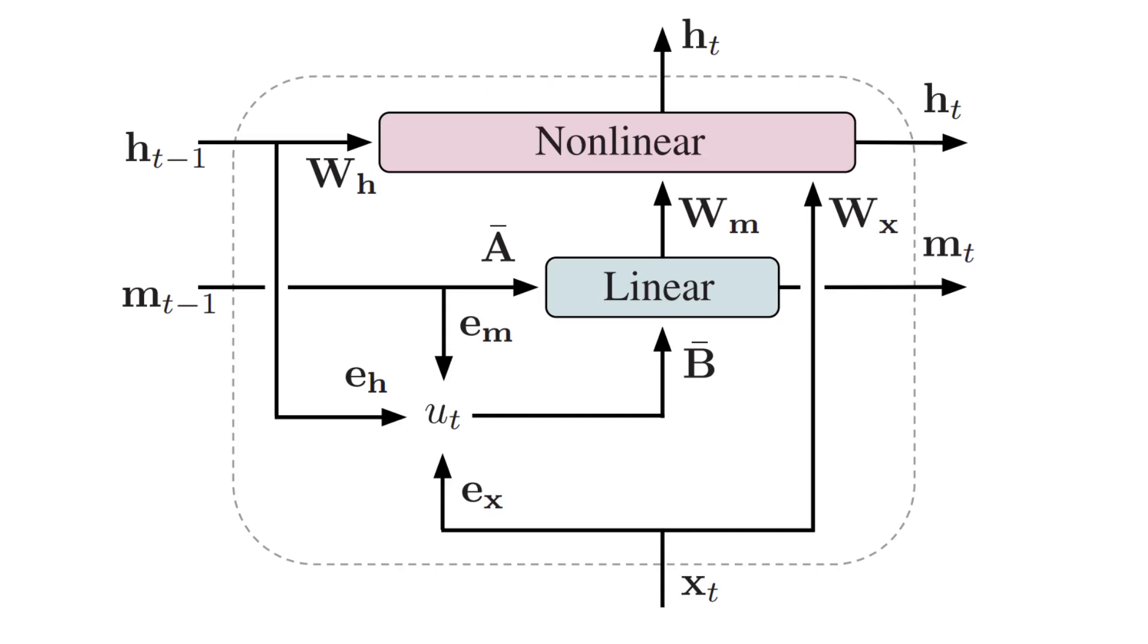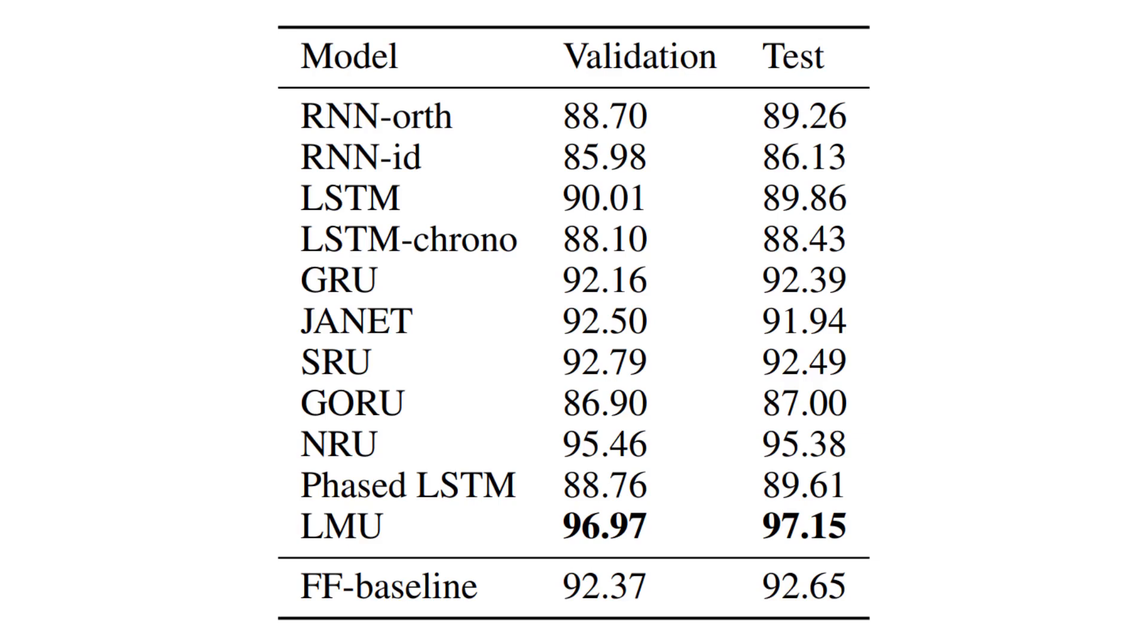This can be expressed in Keras or TensorFlow and trained via backpropagation through time, and this sets a new state-of-the-art result on permuted sequential MNIST, a difficult RNN benchmark.